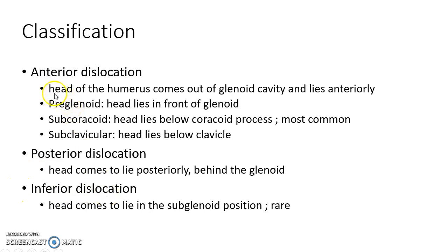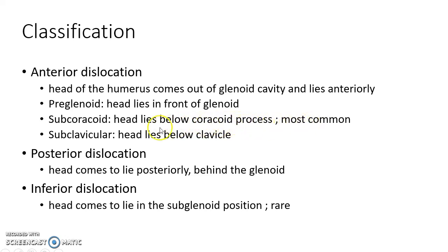In anterior dislocation, the head of the humerus comes out of the glenoid cavity and lies anteriorly. It can further be subdivided into pre-glenoid dislocation, subcoracoid dislocation, and subclavicular dislocation. In pre-glenoid dislocation, the head lies in front of the glenoid. In subcoracoid dislocation, the head lies below the coracoid process — this is the most common type. In subclavicular dislocation, the head lies below the clavicle.